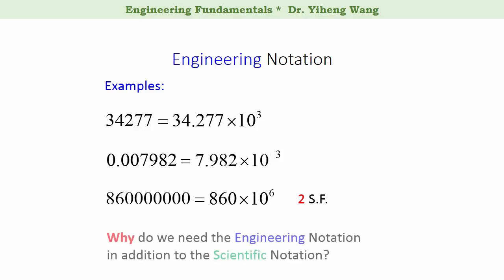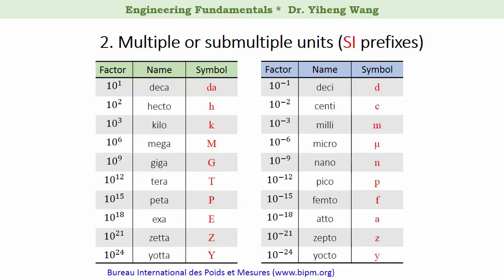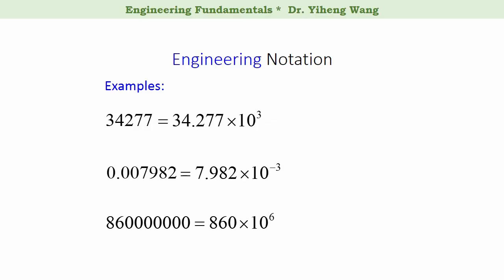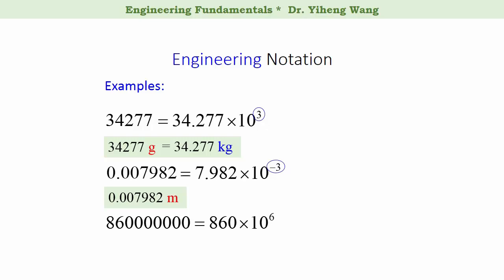You may ask: why do we need engineering notation since we already have scientific notation? If you recall the table on SI prefixes, you will notice that for most prefixes, they change by a factor of a thousand, which is ten to the third power. Therefore, engineering notation can be very convenient in unit conversion. For example, if we have a measurement of 34,277 grams, because of the exponent in engineering notation, we can easily convert that into 34.277 kilograms. Or if we have a measurement of 0.007982 meters, we can easily convert that into millimeters. And if we have a measurement of 860 million Pascals, we can easily convert that into megapascals.